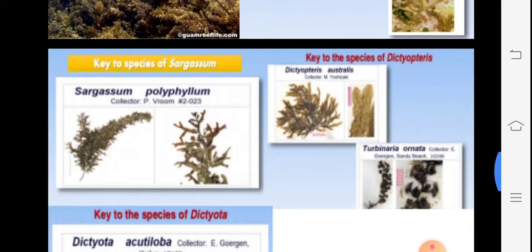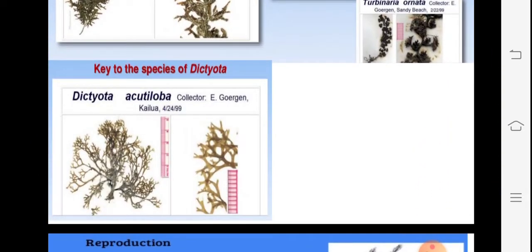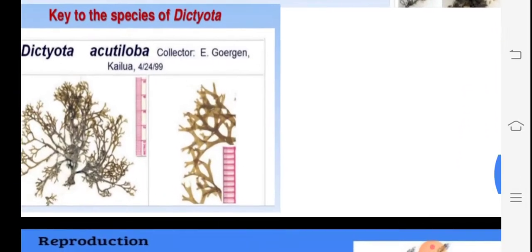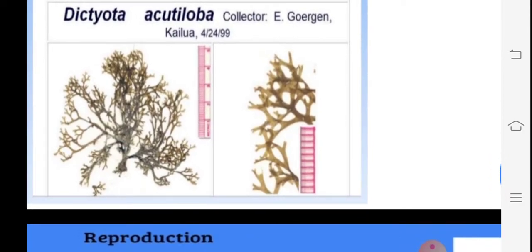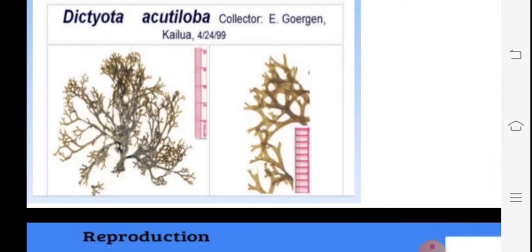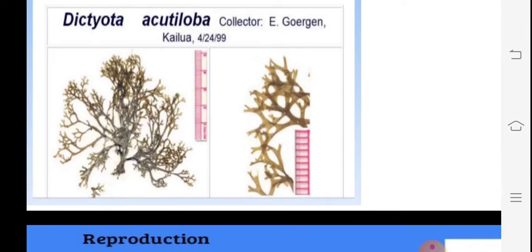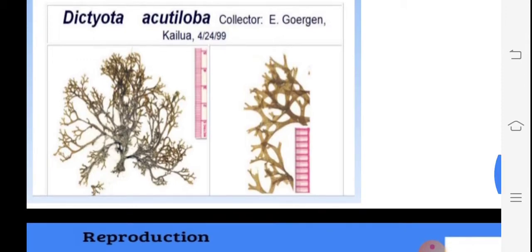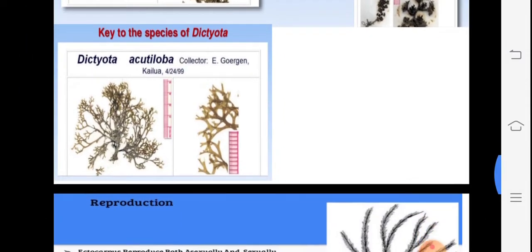I am repeating this because it may not have been fully understood in one lecture. If you observe this Dictyota thallus, these are specimens with a centimeter scale — it is only four centimeters in thallus size, but shows detailed development and structure.